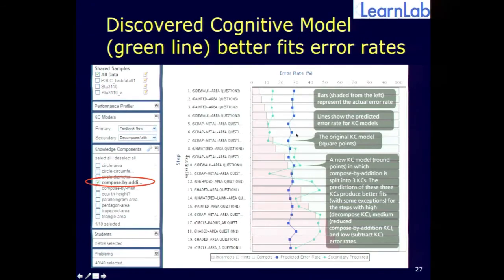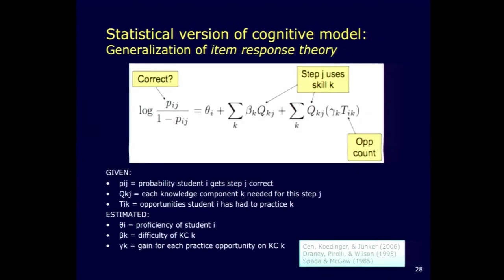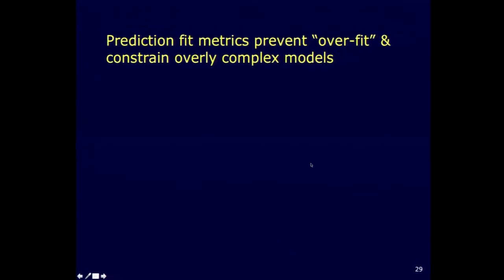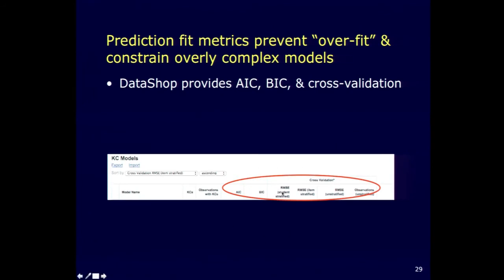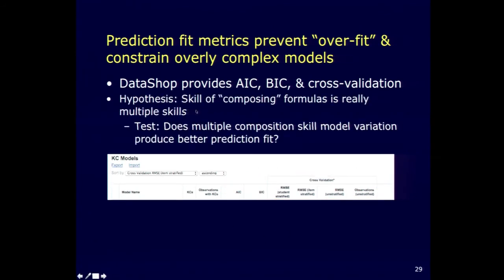Here's the original model that made no distinction against the data. It doesn't fit very well. The three-way distinction is not perfect. There are some that are way off, but generally much better. And of course there's noise in this data, so that would account for it. But, well, actually there may be other difficulty factors we haven't, or hidden skills as we sometimes call them, that we haven't identified. But we've made an improvement. We can test for that statistically. We can go back to this logistic regression model. So we can use various prediction fit metrics to, because we're going to be comparing models that have more parameters against models that have fewer parameters. So we need to do something for that, like AIC, BIC, cross-validation. So DataShop provides all of those. In this case, we were testing this hypothesis that this skill of composing formulas is really multiple skills. So we can test that hypothesis by comparing one model against the other.